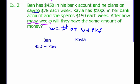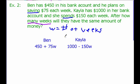For Kayla, she has $1,000 and she's spending $150 — spending being subtraction. So Kayla's expression looks like $1,000 minus $150W. Now, where does our equal sign go? It says we want to know after how many weeks will they both have the same amount of money. So when will $450 plus $75W equal $1,000 minus $150W? This equation models the situation when Ben and Kayla each have the same amount of money.